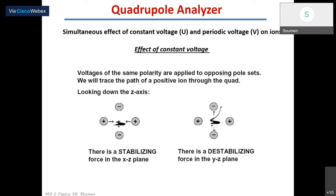In quadrupole analyzers, you have basically four poles. On these four poles, two kinds of voltages are being applied. Along the x direction, there is a positive voltage on both poles, and in the yz plane, there is negative polarity. The ion is moving along the z axis. Any ion will have a stabilizing potential along the xz plane, whereas it will be destabilized along the yz plane — if it is a positive ion; for a negative ion it will be the other way around. Typically, along yz it will be destabilized and along xz it will be stabilized.